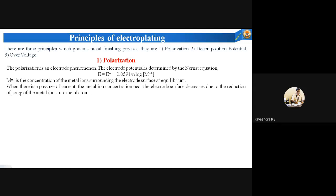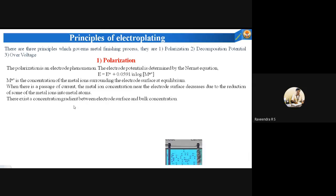When there is a passage of electric current, the metal ion concentration near the electrode decreases. This is due to the reduction of some metal ions into metal atoms — Mⁿ⁺ accepts electrons and forms metal. Due to this decrease in the metal ion concentration near the electrode, there exists a concentration gradient between the electrode surface and the bulk concentration, where the metal ion concentration is more in the bulk and less at the electrode surface.